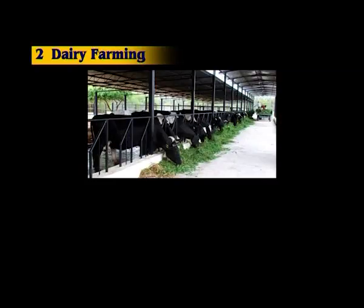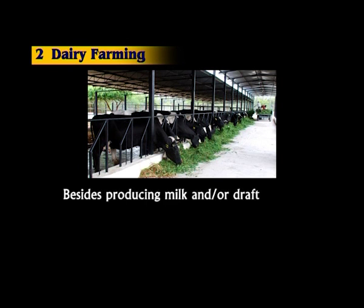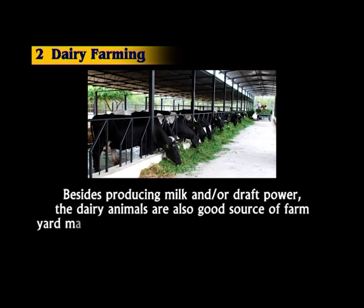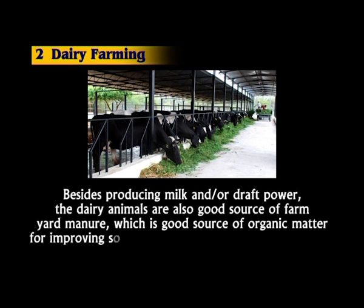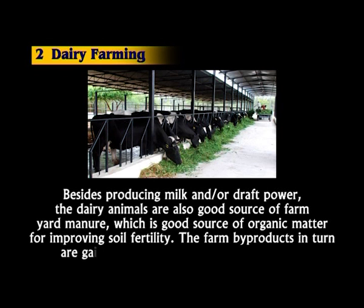Number two is dairy farming. Besides producing milk and draft power, the dairy animals are also a good source of farmyard manure, which is a good source of organic matter for improving soil fertility. The farm by-products in turn are gainfully utilized for feeding the animals.